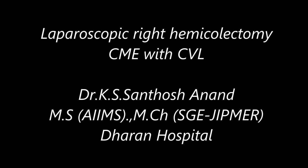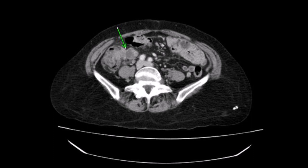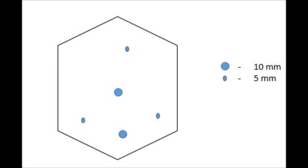We are seeing a laparoscopic right hemicolectomy case with complete mesocolic excision and central vascular ligation, which is D3 lymphadenectomy for oncological benefits. The patient is a 68-year-old female with a growth in the cecum with bulky ileocolic nodes as shown in this picture.